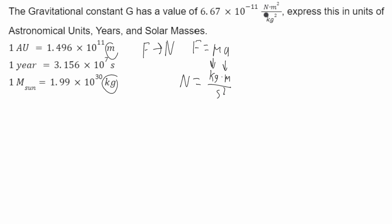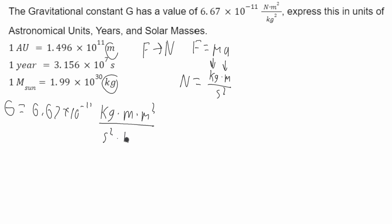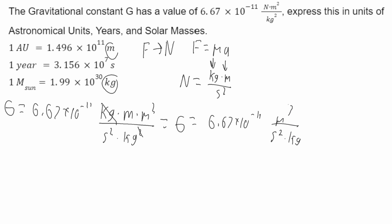Now I can plug these new units into the units for G in place of newtons. We get that G is equal to 6.67 times 10 to the negative 11, with units of kilograms times meters times meters squared over seconds squared times kilograms squared. The kilogram on the top cancels with one on the bottom, so G equals 6.67 times 10 to the negative 11 meters cubed over seconds squared times kilograms.